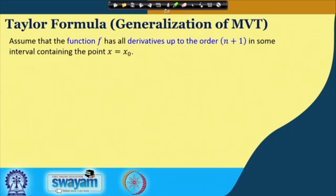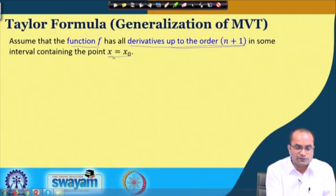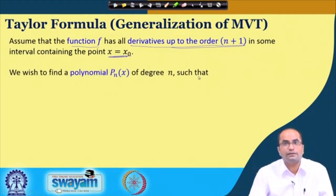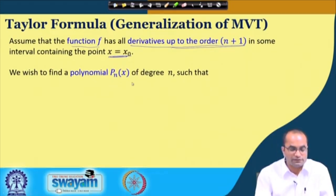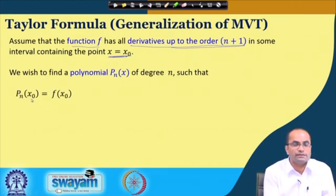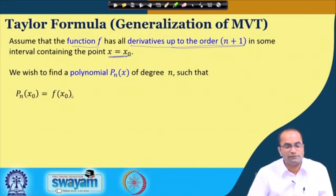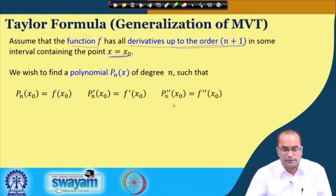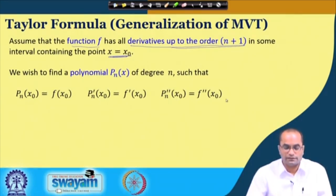We assume that the function has all derivatives up to order n+1 in some interval containing the point x₀. Having this, we wish to find a polynomial of degree n with the conditions that the polynomial at x₀ equals the function value at x₀, the first derivative of the polynomial equals the first derivative of the function, the second derivative of the polynomial at x₀ equals the second derivative of the function at x₀, and so on.